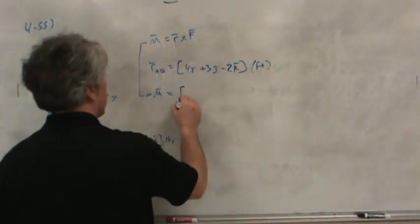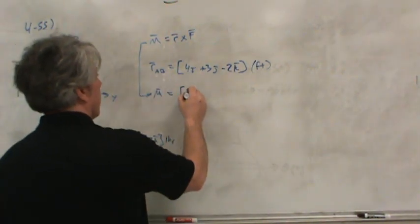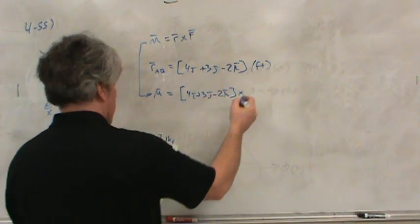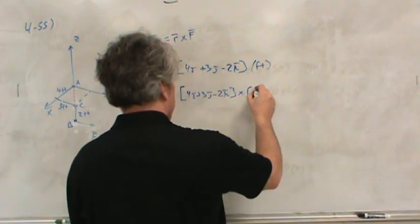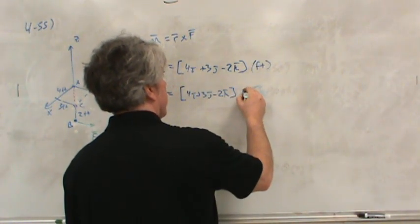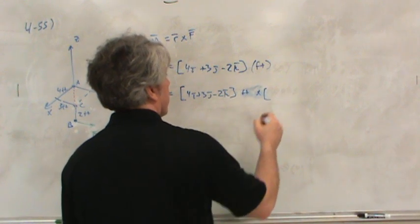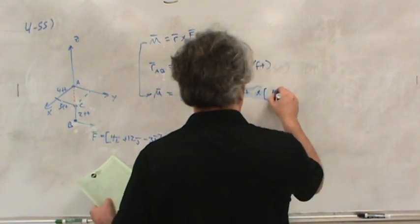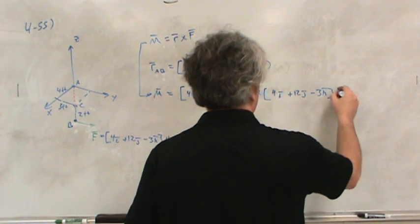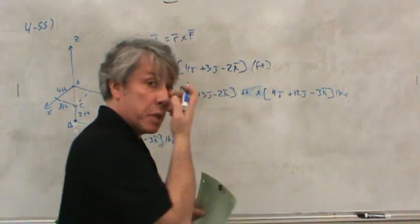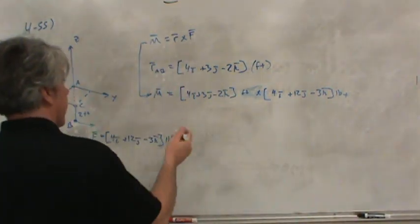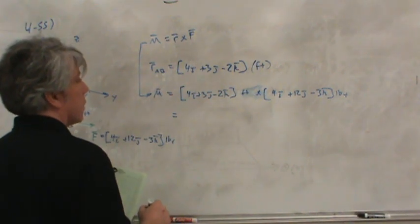So, writing it out, we'll write R first, 4i plus 3j minus 2k, crossed with the force 4i. Let's be careful here. These are all feet so far. So then crossed with the force F, 4i plus 12j minus 3k, which are all pounds force. And so the units we expect to get are simply foot pounds force, right? Foot pounds force.